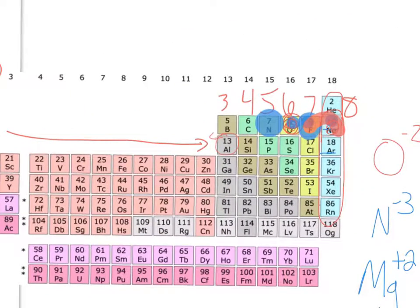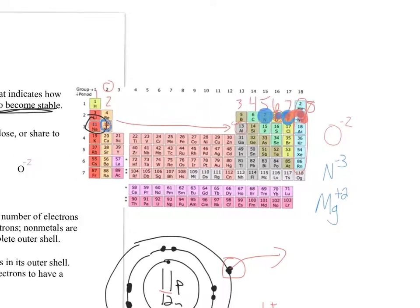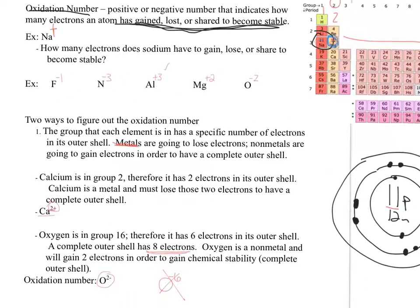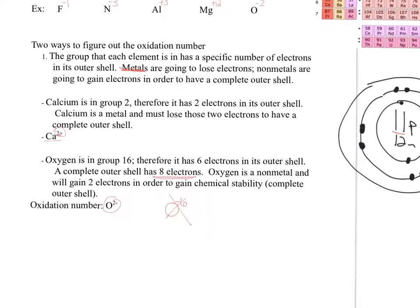Oxygen is one, two spaces away from the nearest noble gas, so its oxidation number is negative two. There are varying oxidation states, but we'll keep it simple for now. Understanding how to determine oxidation numbers is crucial when we go to write ionic bonds, so that's what we want to focus on.